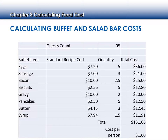We're just looking at what our cost per person should be. In this case I served 95 people, so my cost per person is $1.60. When looking at buffets, you can look at a food cost percentage but you can also look at an appropriate range of cost per person.